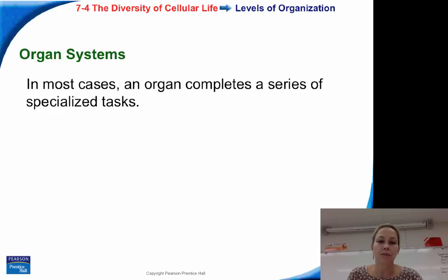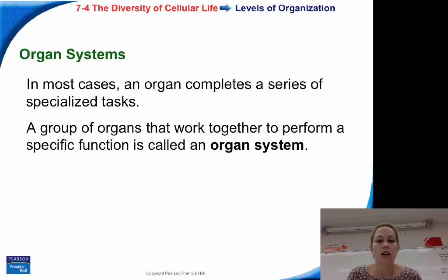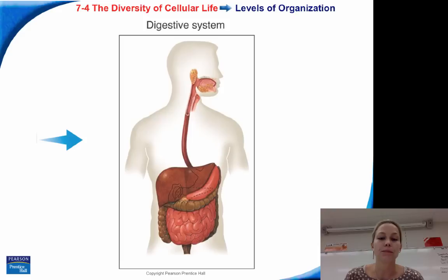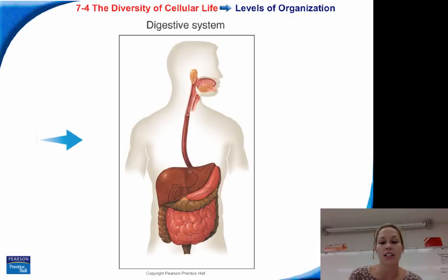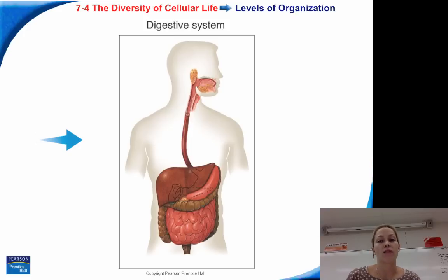Organ systems are a group of organs that work together to perform a specific function. The digestive system, for example, ties together different organs: the mouth, the stomach, the small intestine, the large intestine, and associated organs like the liver, the pancreas, and the gallbladder — all working together to help digestion as part of the digestive system.